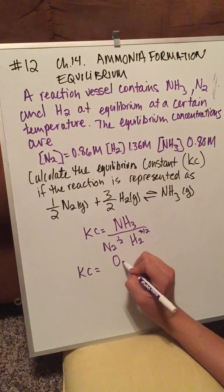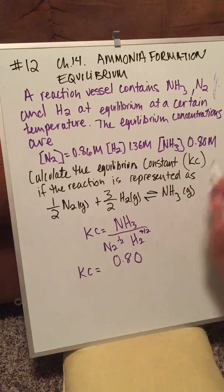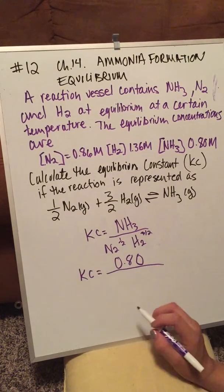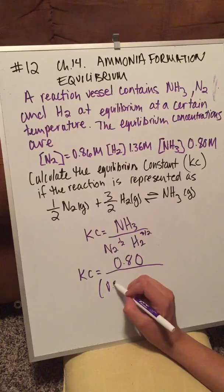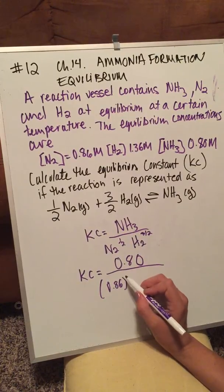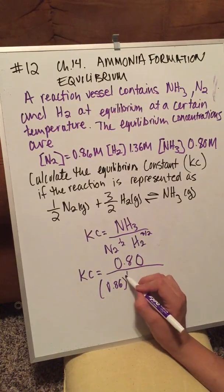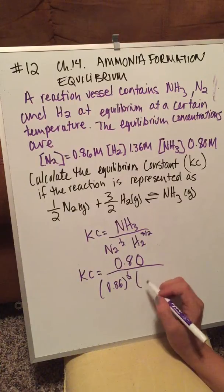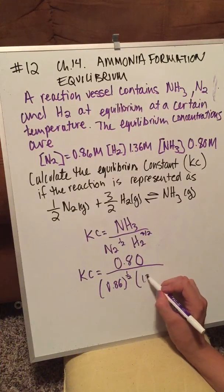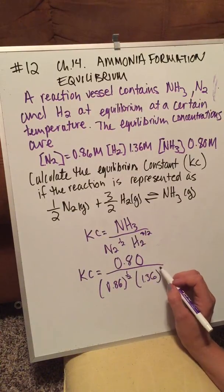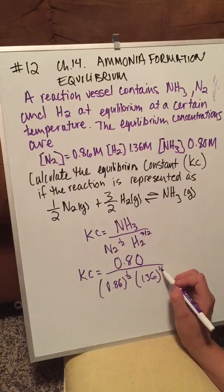So we plug in 0.80 for ammonia in the numerator, and then 0.86 to the 1/2 times 1.36 to the 3/2 in the denominator.